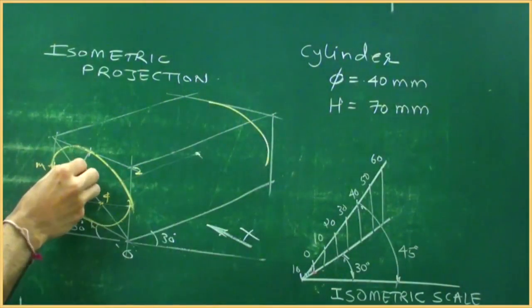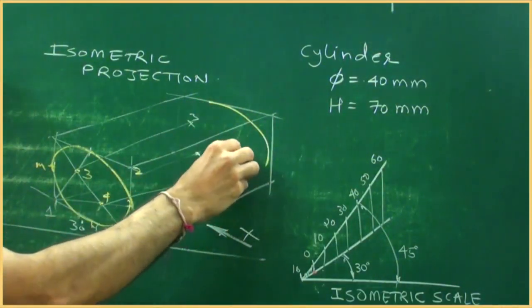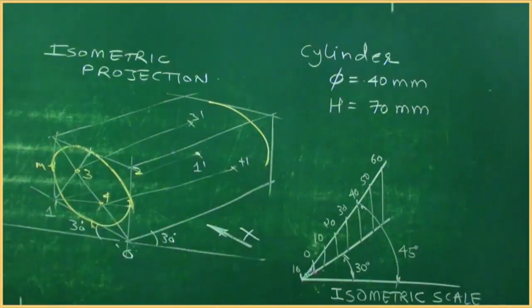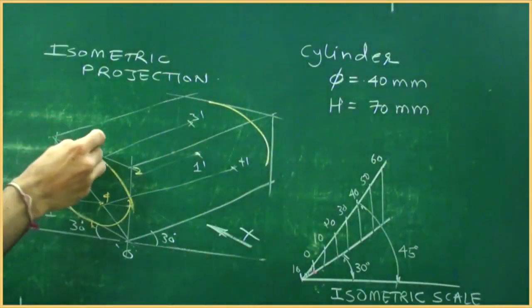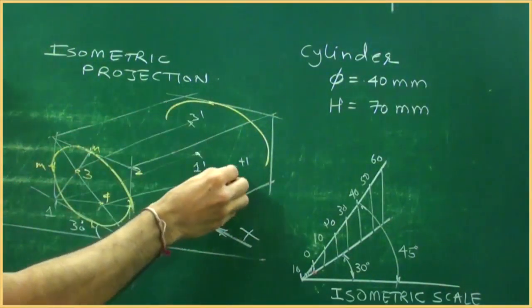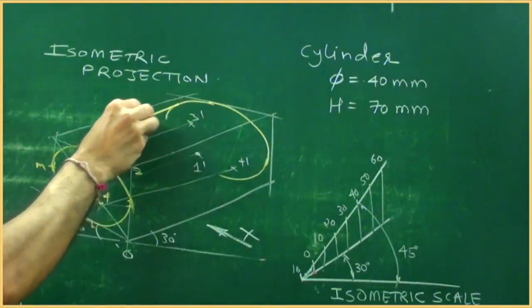Same way, from point 3 we will go behind by 70, from point 4 also we will go behind by 70, so I am writing dash. Now take this radius, 3 to M and from here again you draw a curve, 4 to M again you draw a curve, after that you need to draw tangent to this